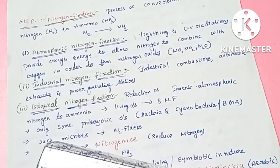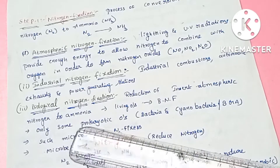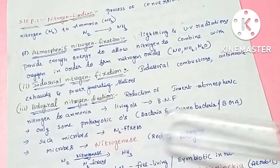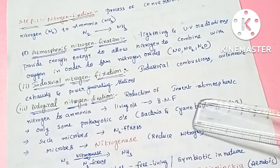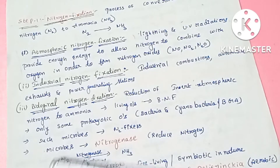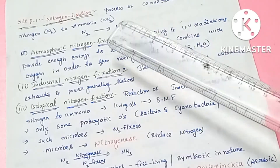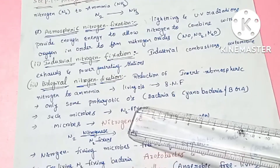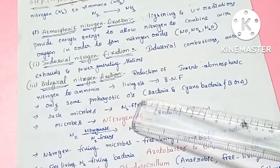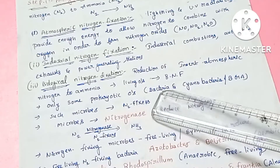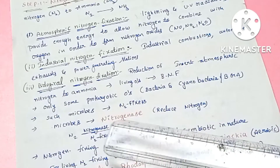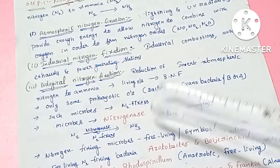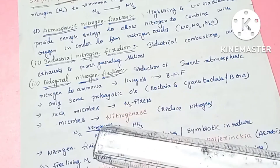The next is biological nitrogen fixation, which is the reduction of inert atmospheric nitrogen — dinitrogen — into ammonia by living organisms and microorganisms. Inert atmospheric nitrogen is converted through this process. Ammonia can be produced by living organisms and microorganisms. That is biological nitrogen fixation.